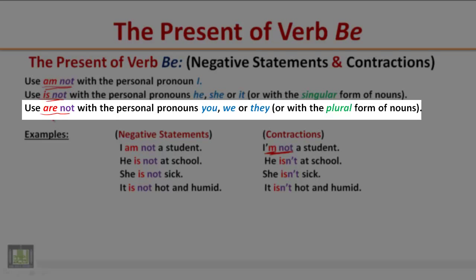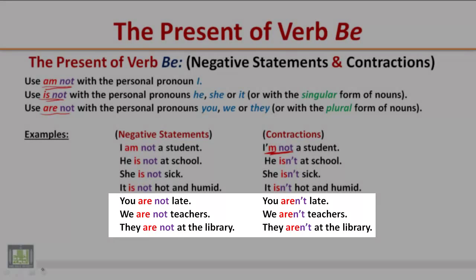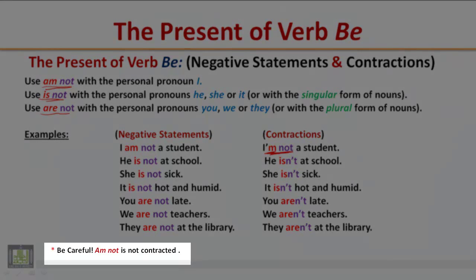Use 'are not' with the personal pronouns you, we, or they, or with a plural form of nouns. Examples: You are not late / You aren't late. We are not teachers / We aren't teachers. They are not at the library / They aren't at the library. Be careful: 'I'm not' is not contracted, so do not contract the verb 'am' with the word 'not'.